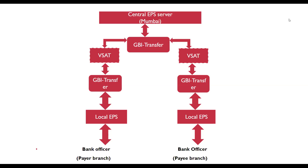The pending files are collected in the in-directory and sent to the PM application at that office. The transaction headers are then changed to send a credit request to the payment master. These transactions with changed headers are encrypted and placed in the out-directory of EPS central. The GBI Transfer application at EPS central office collects pending transactions from the out-directory and sends them to the payee branch through Vsat. This transaction is transferred and stored in the in-directory of the payee branch, which is later collected and posted in PM.